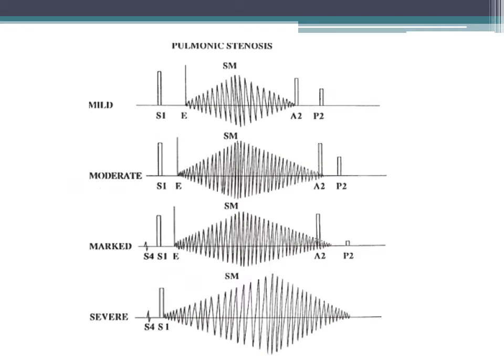As pulmonary stenosis progresses, the murmur duration is prolonged and it becomes later peaking. With mild pulmonary stenosis you see the ejection click and then a crescendo-decrescendo murmur, but as severity increases, the murmur becomes later peaking and can even extend past the second heart sound.